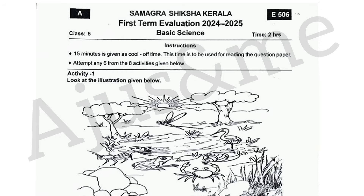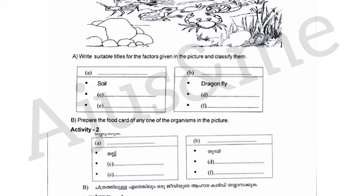Activity 1. Look at the illustration given below. The question is: write suitable titles for the factors given in the picture and classify them.